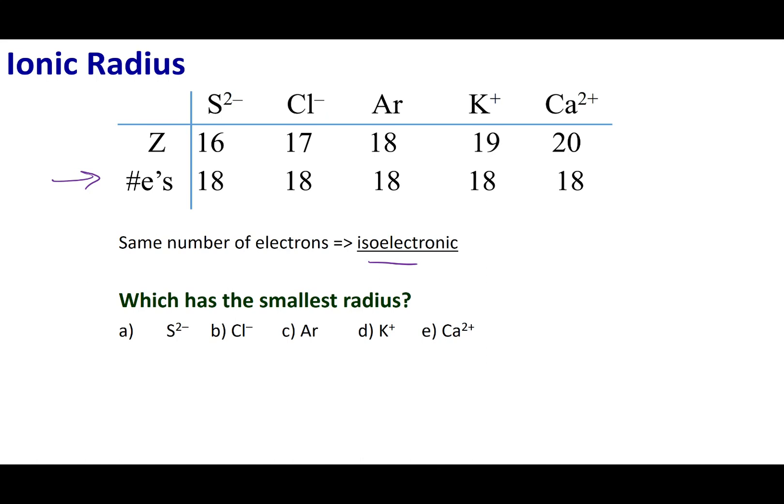If I look at these ions, not the atoms, the ions, which one has the smallest radius?